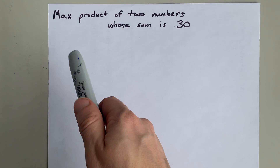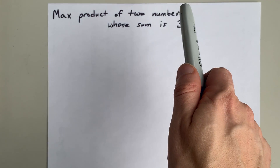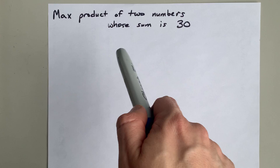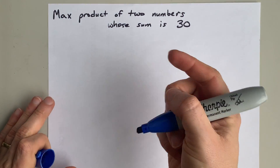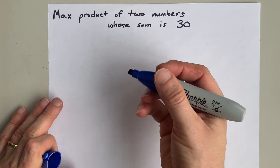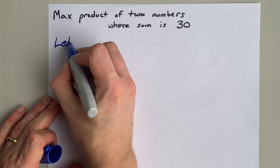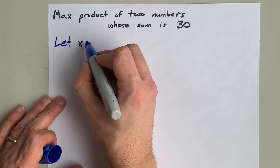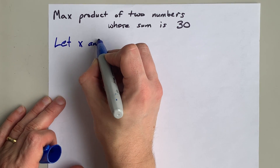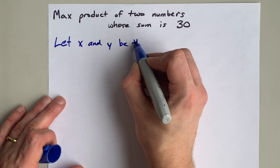We are going to find the maximum product of two numbers whose sum is 30. I'm going to say that those numbers are x and y. Your teacher may want a let statement: let x and y be the numbers.